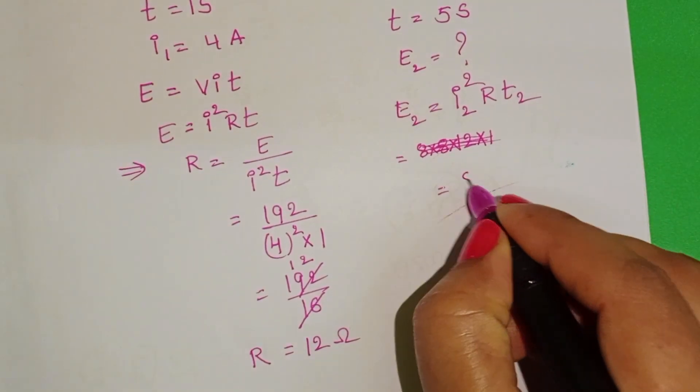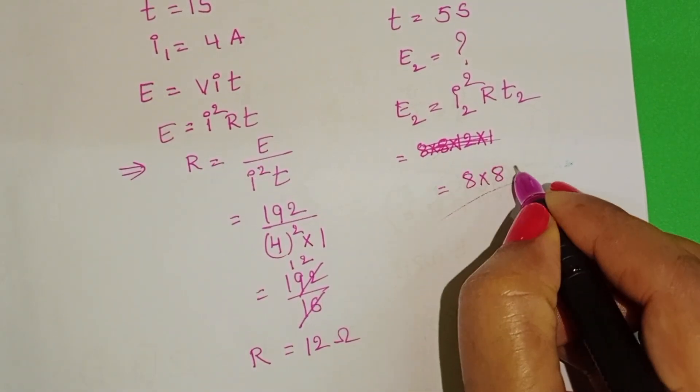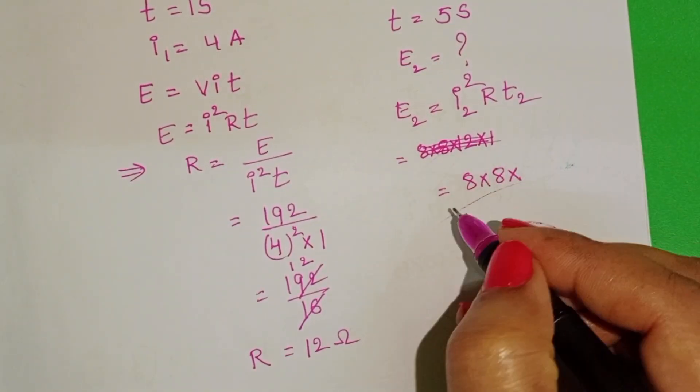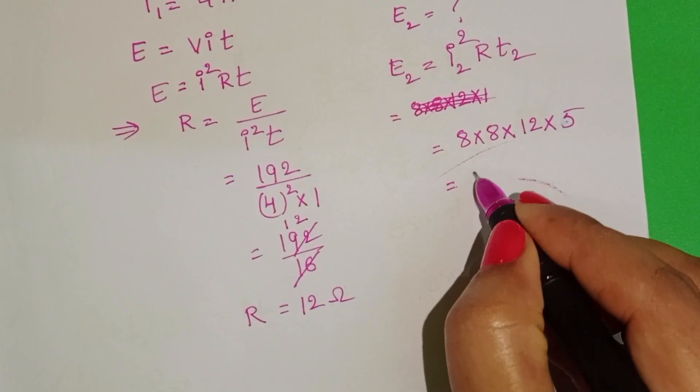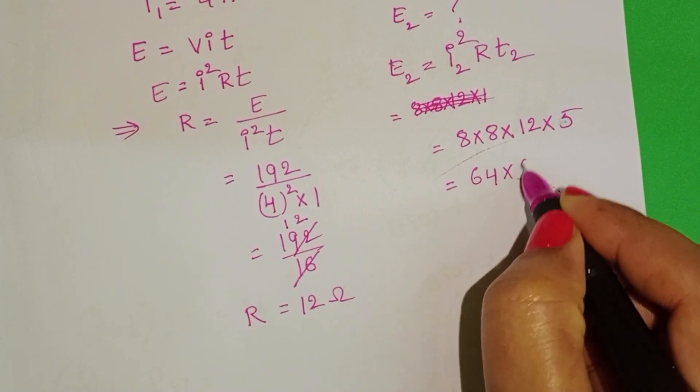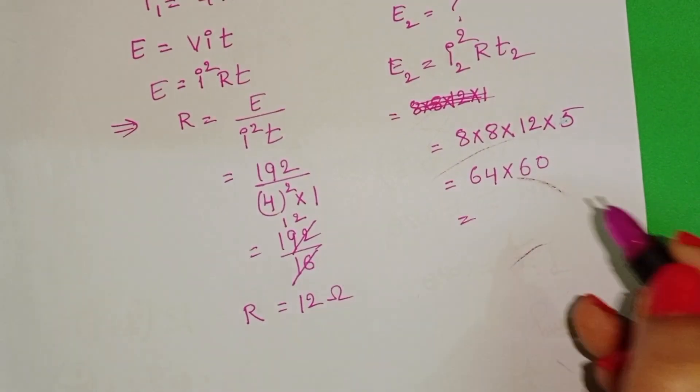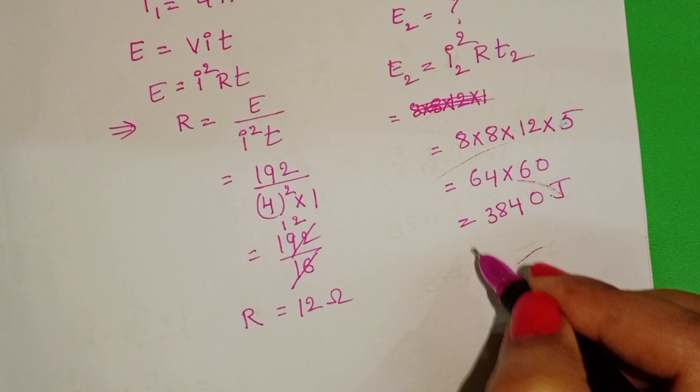I2 equals 8 amperes, 8 into 8 into resistance is 12 ohm, and given time is 5 seconds. 64 into 60, that equals 3840 joules.